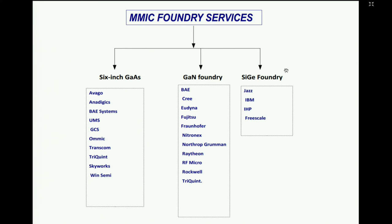To avoid those restrictions, people are trying to develop gallium nitride on silicon. Efficiency is a bit less but there is no restriction. OMIC is developing gallium nitride on silicon, and while it is still not fully mature, it is very close.